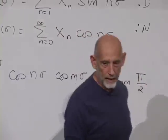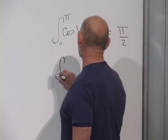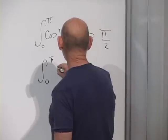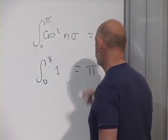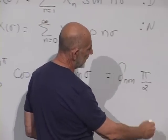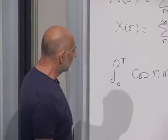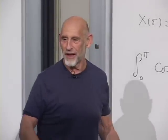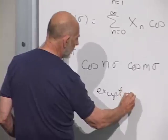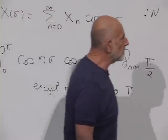There is one exceptional case: when n and m are both equal to 0. The integral of cosine(0) times cosine(0) from 0 to pi is just the integral of 1 d*sigma from 0 to pi, which equals pi. So the n equals m equals 0 case gives pi rather than pi over 2.